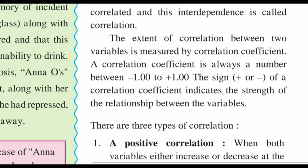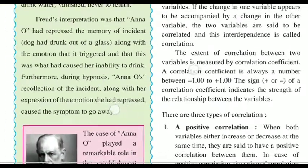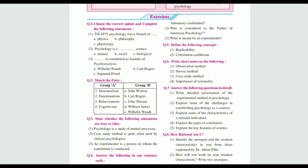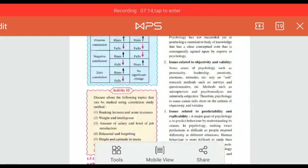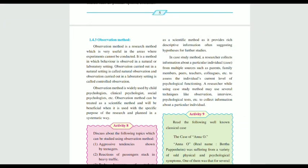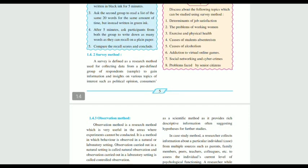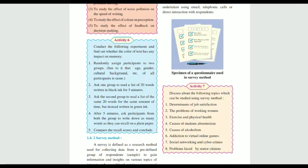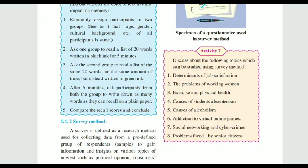Now we move on to question number 6, chapter 1. That is the observation method — it is on page number 6. Please go to page number 6 for your observation method. Both paragraphs you are going to write. Then the next question is about survey method — you are going to write the entire paragraph with the example. Examples include determinants of job satisfaction, problems of working movement, exercise and physical health, and cause of student absenteeism. Write all these examples to make your answer more informative.